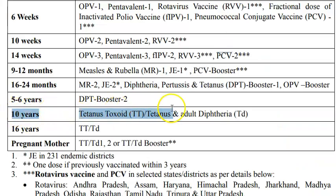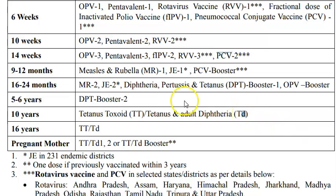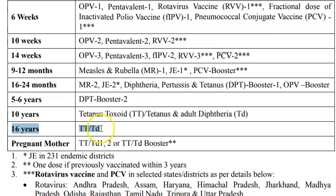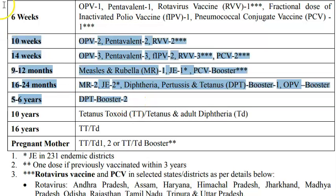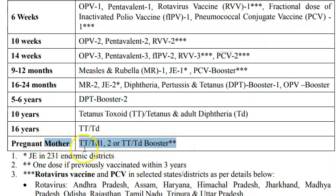At ten years, tetanus toxoid (TT) or tetanus and adult diphtheria (Td) is given — a small 'd' indicates an adult dose of diphtheria. At 16 years, same: TT or Td. Since this video focuses on under-five children, we cover the schedule only up to five to six years. For pregnant women, tetanus toxoid is now often given combined with diphtheria due to rising diphtheria cases.